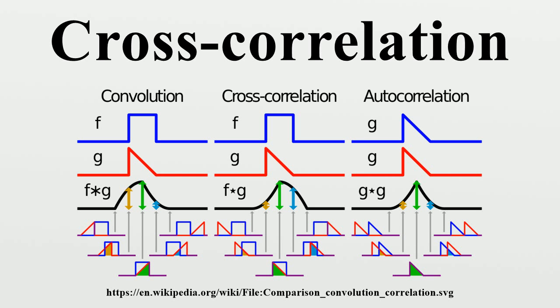For continuous functions f and g, the cross-correlation is defined as, where denotes the complex conjugate of and is the lag. Similarly, for discrete functions, the cross-correlation is defined as,